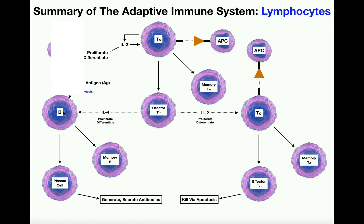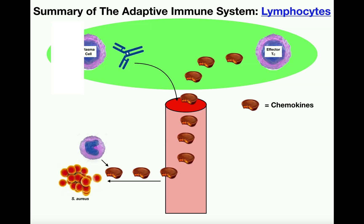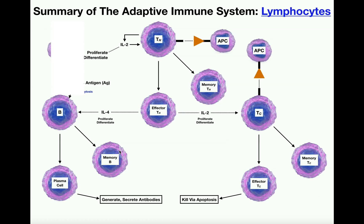Assuming that the B cell becomes sensitized to the antigen and receives the interleukin-4 signal from the effector helper T cell, this B cell will then proliferate and differentiate. One cell type B cells differentiate into is a memory B cell, which functions very similarly to memory helper T cells and memory cytotoxic T cells — remaining in the secondary lymphoid organs awaiting secondary exposure to the pathogen for a much faster response.